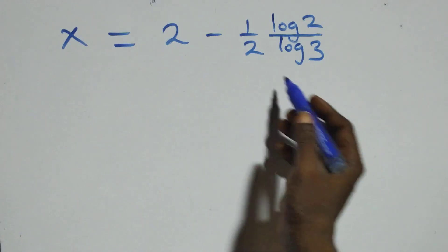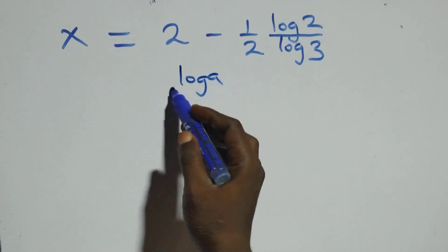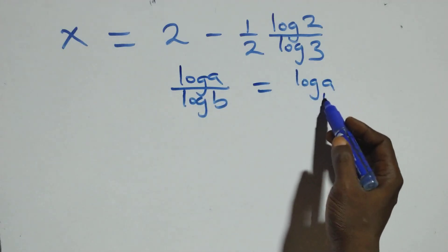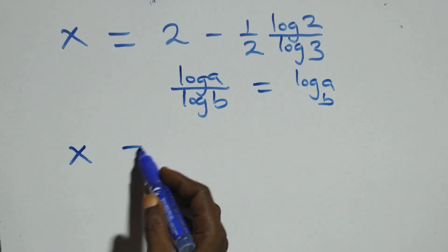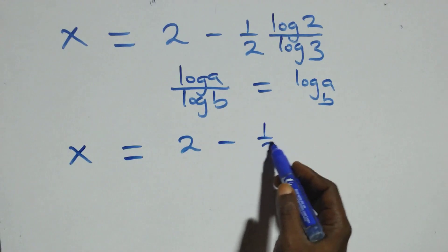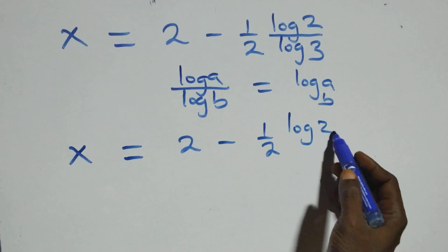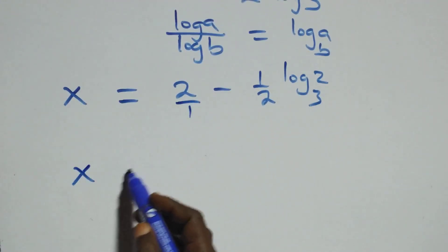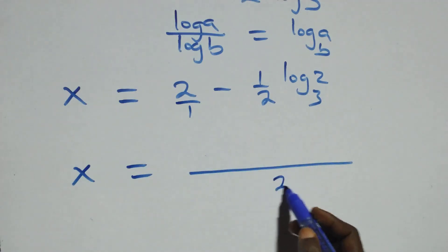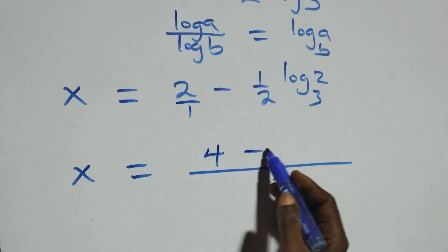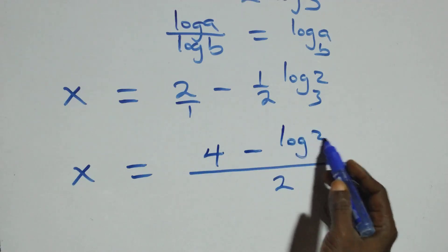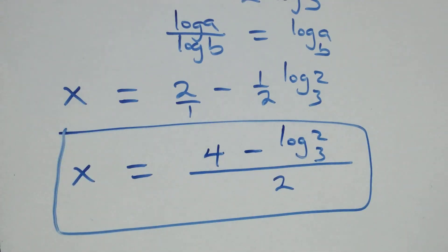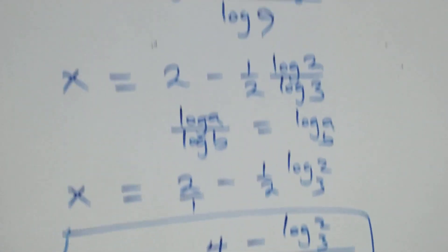We apply the change of base rule: log a over log b equals log a to base b. So x equals 2 minus 1 over 2 times log 2 base 3. Bringing this together as one fraction with denominator 2, we get x equals (4 minus log 2 base 3) all over 2.